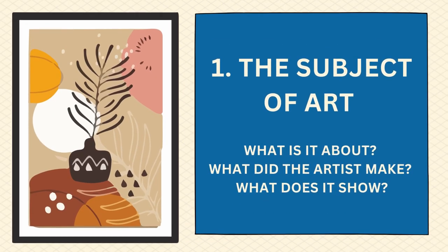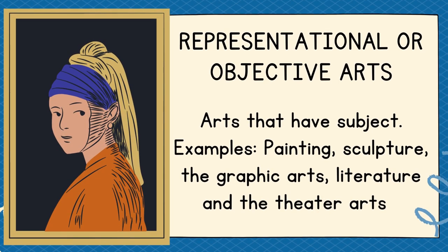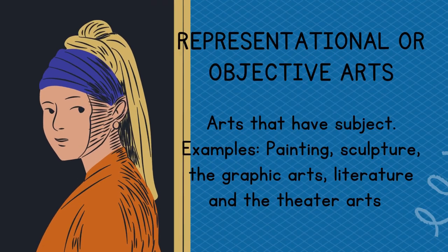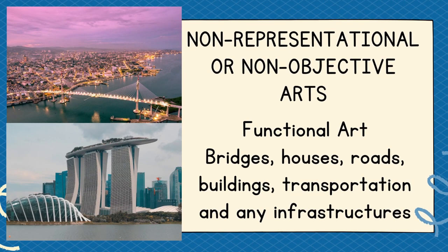The subject of art asks the questions: what is it about, what did the artist make, and what does it show? The subject of art refers to any person, object, scene, or event described or represented in a work of art. Some arts have subjects; others do not. Arts that have a subject are called representational or objective arts — painting, sculpture, the graphic arts, literature, and the theater arts. Those that do not have a subject are known as non-representational or non-objective arts — music, architecture, and the majority of functional arts.